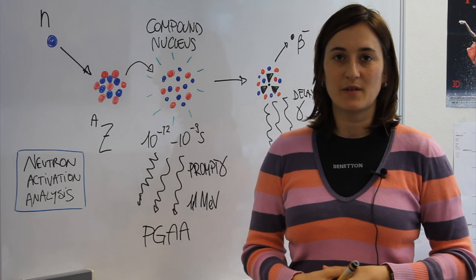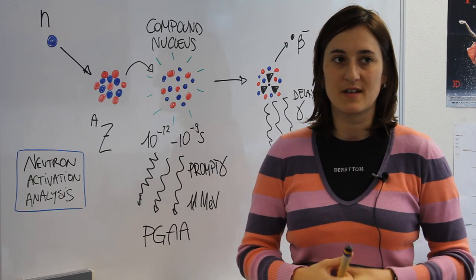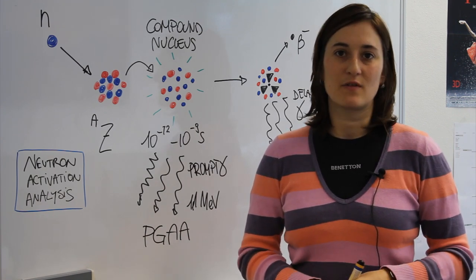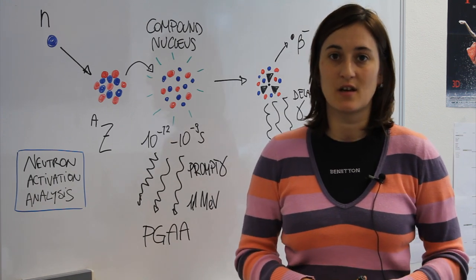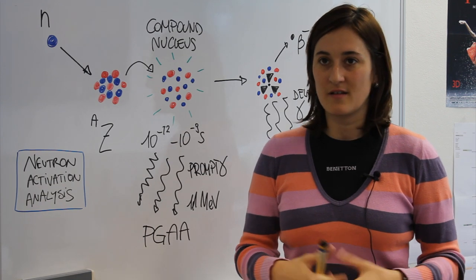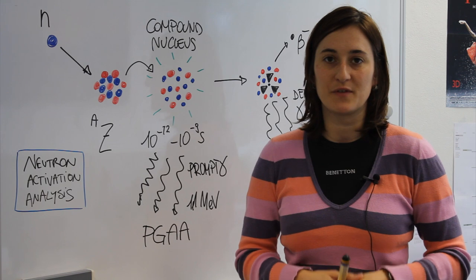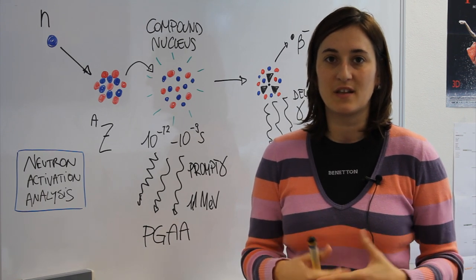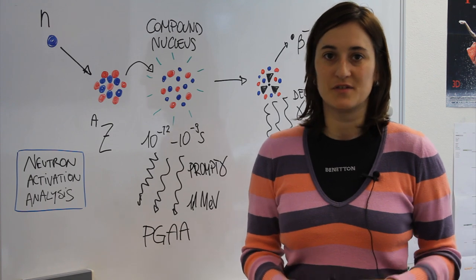To come back to NAA, some practical applications of this method are for example in forensic science. Arsenicum can be detected in trace amounts in hair after a poisoning. Another application in archaeology, for example, is the determination of the trace elements that are particular for the determination of the geographical origin of artifacts.